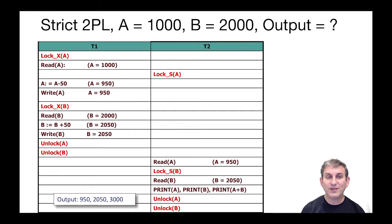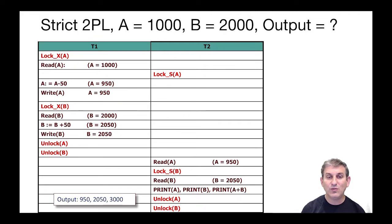Finally, here's a strict two-phase locking schedule. T1 locks A and does the read. T2 requests a shared lock on A but can't get it because it's incompatible with T1's exclusive lock. T1 subtracts 50 from A, does the write, gets an exclusive lock on B, does a read of B, adds 50 in memory, does the write, and then simultaneously unlocks A and B. Now T2 can get its lock on A, requests a lock on B, does its reads and print, sees the effects of T1, and then atomically unlocks both A and B, ending the strict two-phase locking protocol. This gives us a conflict serial schedule.